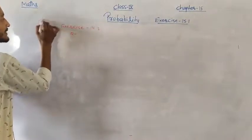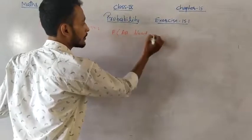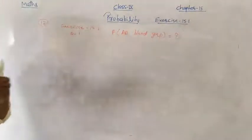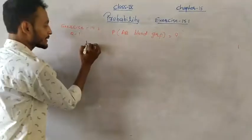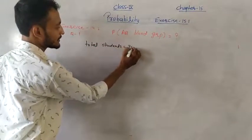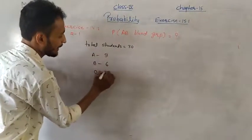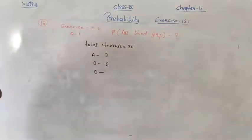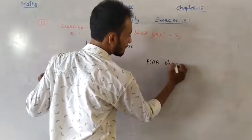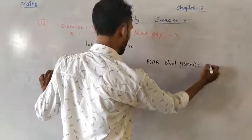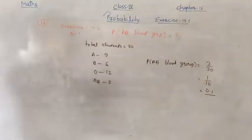Last question: Refer to Exercise 14.2, Question 1. Find the probability of AB blood group. Total students = 30. Blood group A = 9, B = 6, O = 12, AB = 3. Probability of AB = 3/30 = 1/10 = 0.1. You can express this in any of these forms.